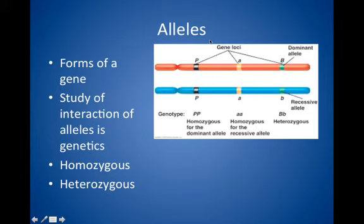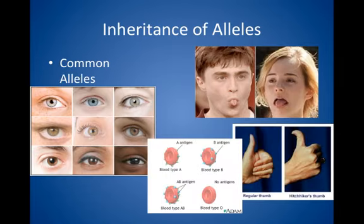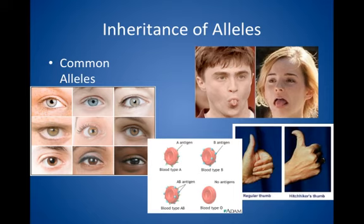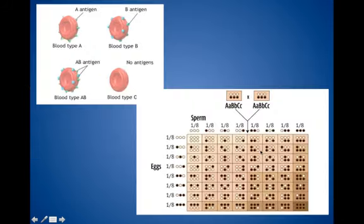Because you only have two of each allele, you're only going to inherit either two As, two Bs, an A and a B, or an O. The ability to roll your tongue is also an inherited trait from your genetic basis — not everyone can roll their tongue, but the ability comes from genes that allow the muscles of the tongue to fold in specific ways. Whether or not you have a hitchhiker's thumb is also controlled by the combination of alleles inherited from your parents.